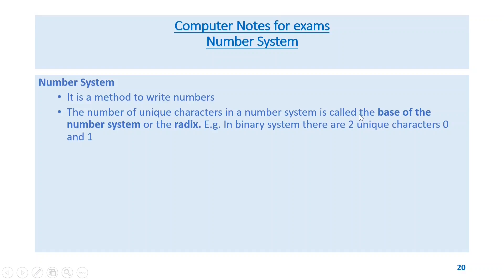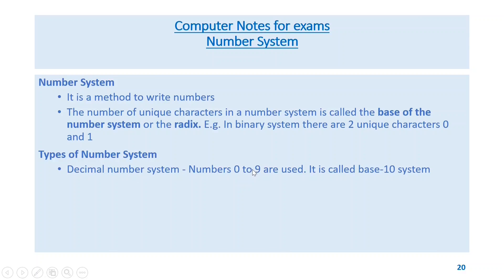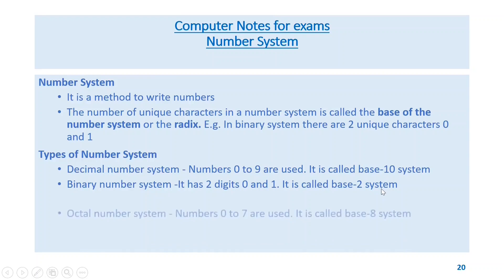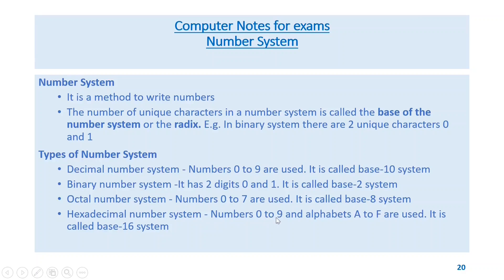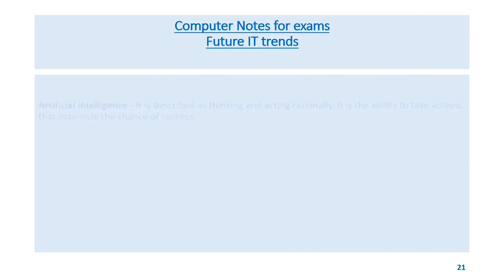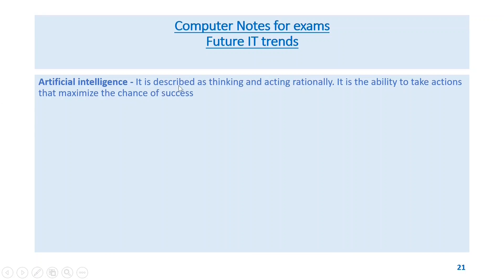Number system is a method to write numbers. The number of unique characters in a number system is called the base or radix. Decimal number system uses digits 0–9 (base 10). Binary number system uses digits 0 and 1 (base 2). Octal number system uses digits 0–7 (base 8). Hexadecimal number system uses numbers 0–9 and alphabets A–F (base 16).